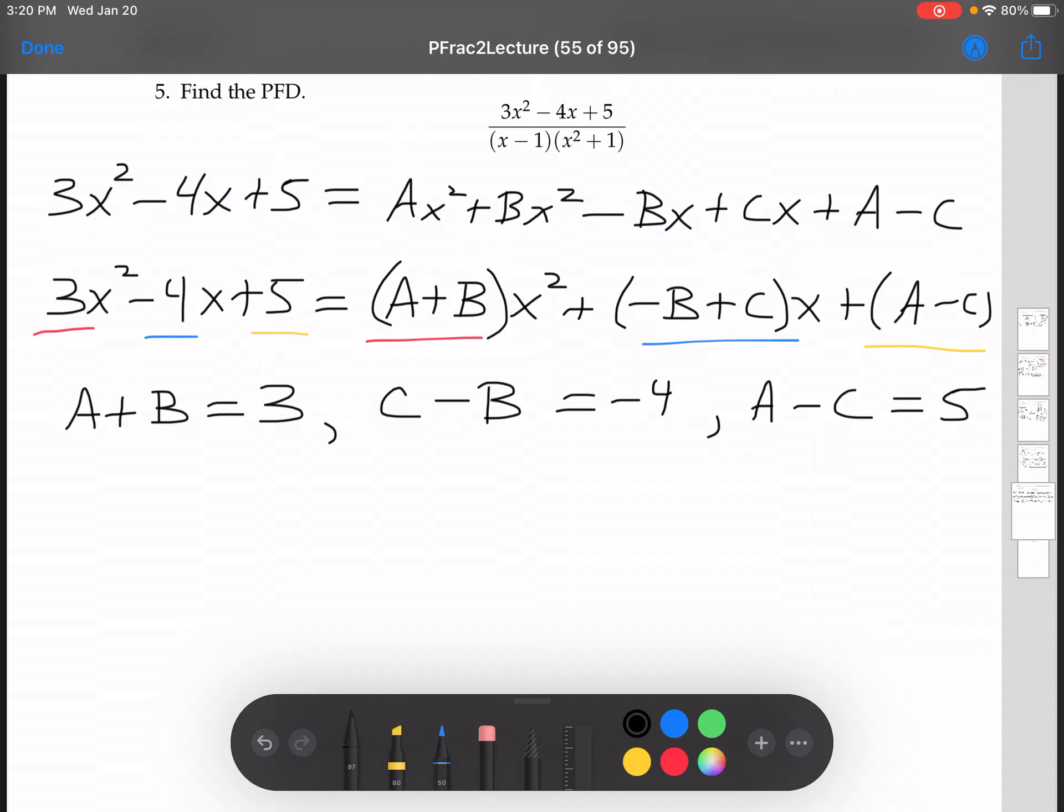All right, so what I'm going to do is I'm going to write this last equation here in terms of a. Add c to both sides, and we have that a is equal to 5 plus c. Now, take that a and put it in over there. So a is equal to 5 plus c, so that says that 5 plus c plus b equals 3. So c plus b equals negative 2.